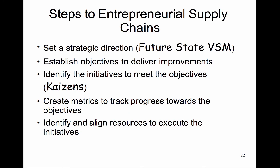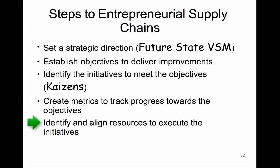Steps to an entrepreneurial supply chain: set a strategic direction — this is the future state VSM; establish objectives to deliver improvements; identify the initiatives to meet the objectives, or Kaizens; create metrics to track progress towards the objectives; then identify and align resources to properly execute the initiatives.